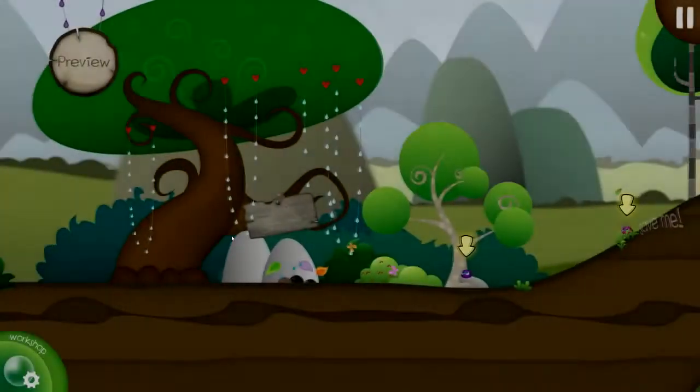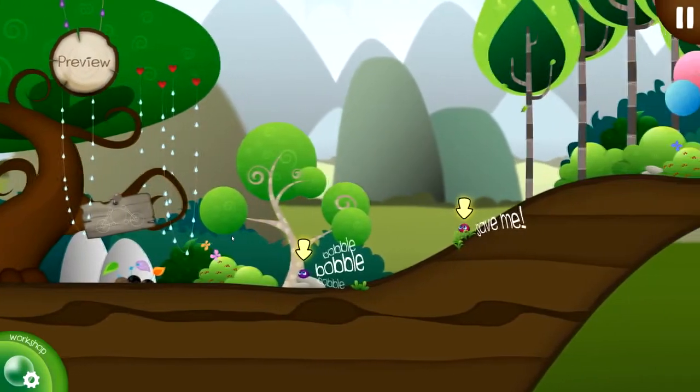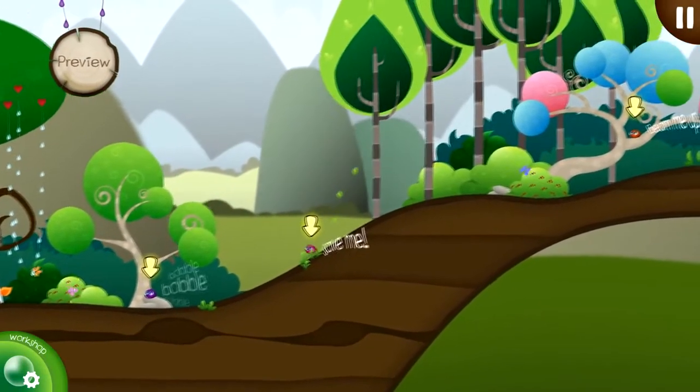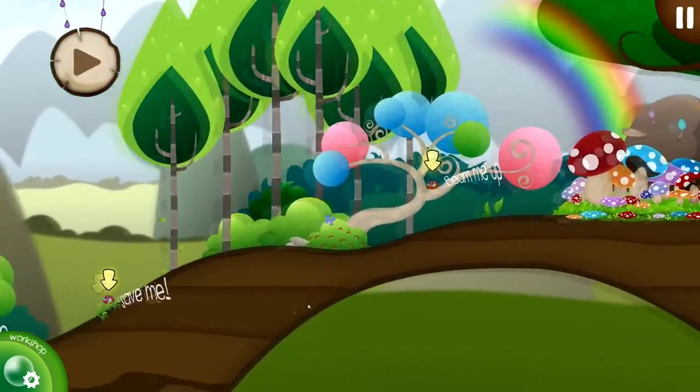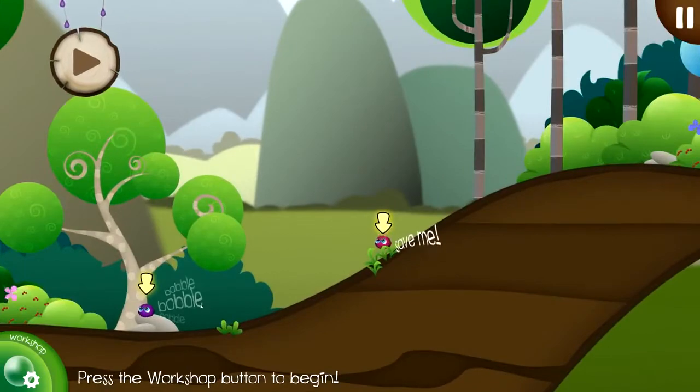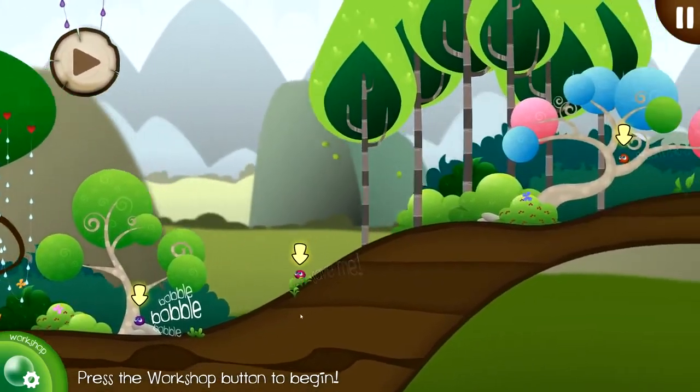The goal of Keebles is to build vehicles that can get across a landscape, saving all of the Keebles on the way. As you can see in the preview, we've highlighted the Keebles to make them nice and obvious for you. You can always grab the preview and scroll it around and zoom in and out to get a better idea of the lay of the land.